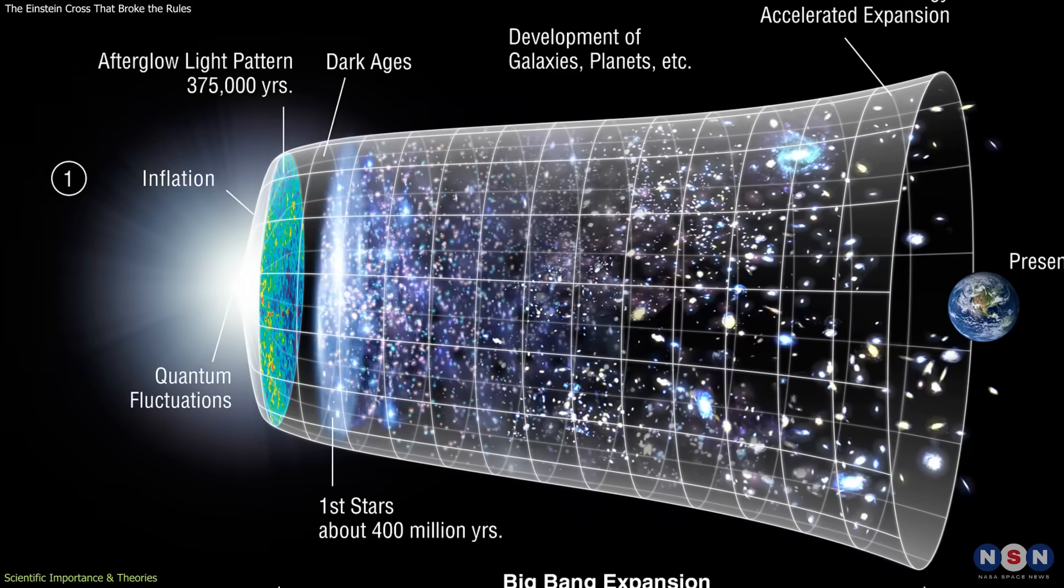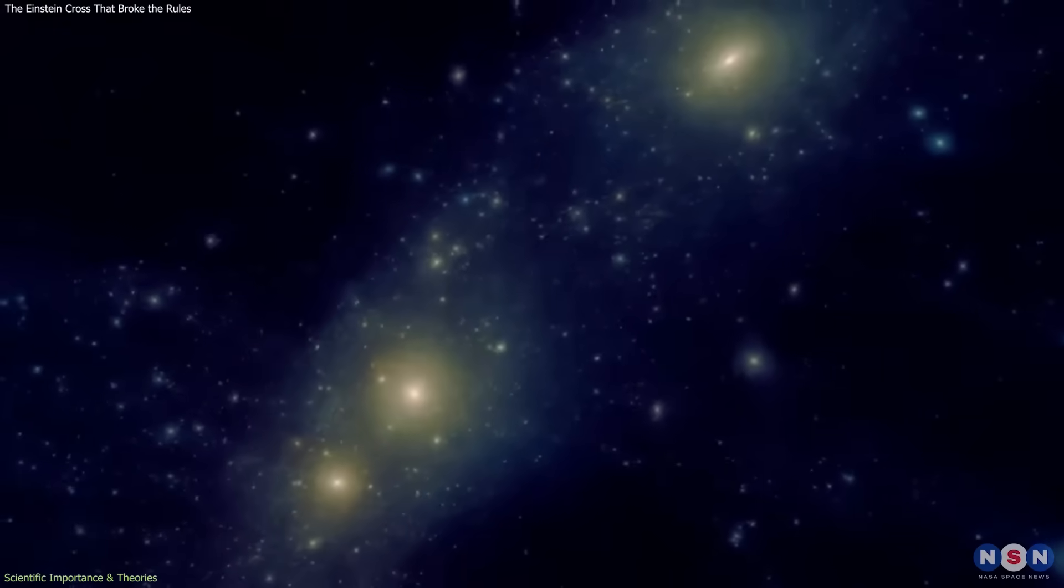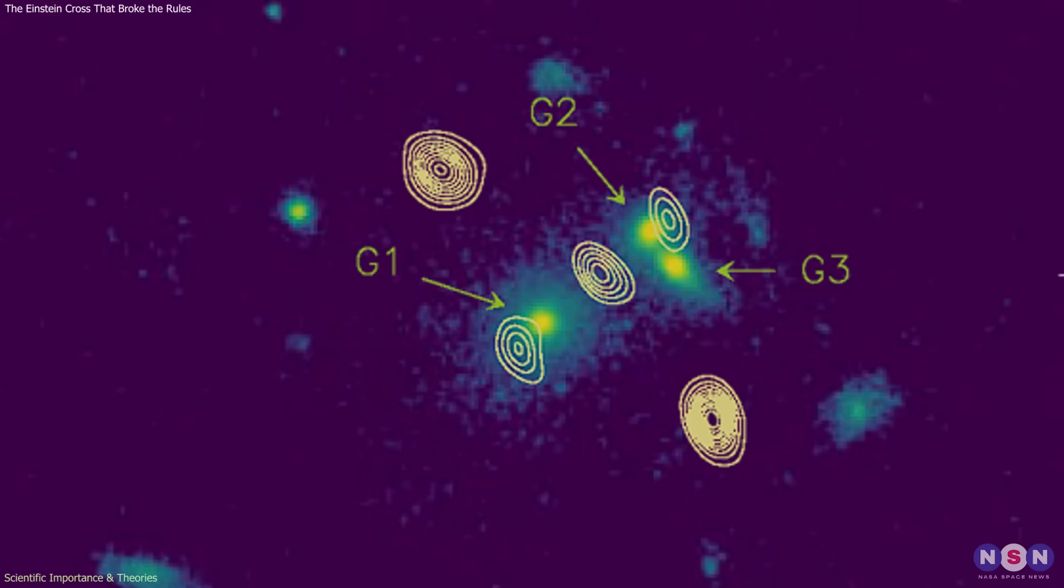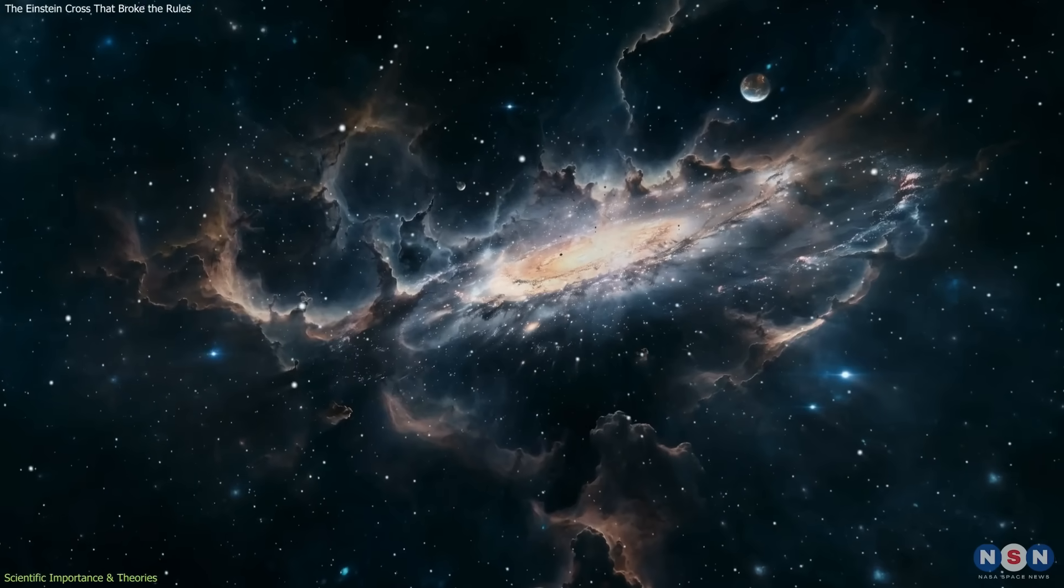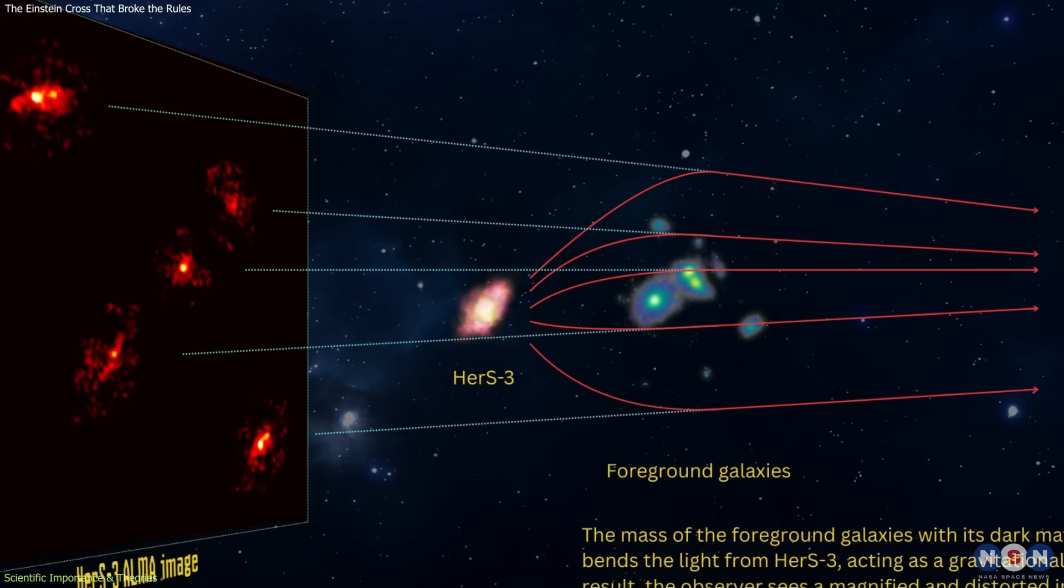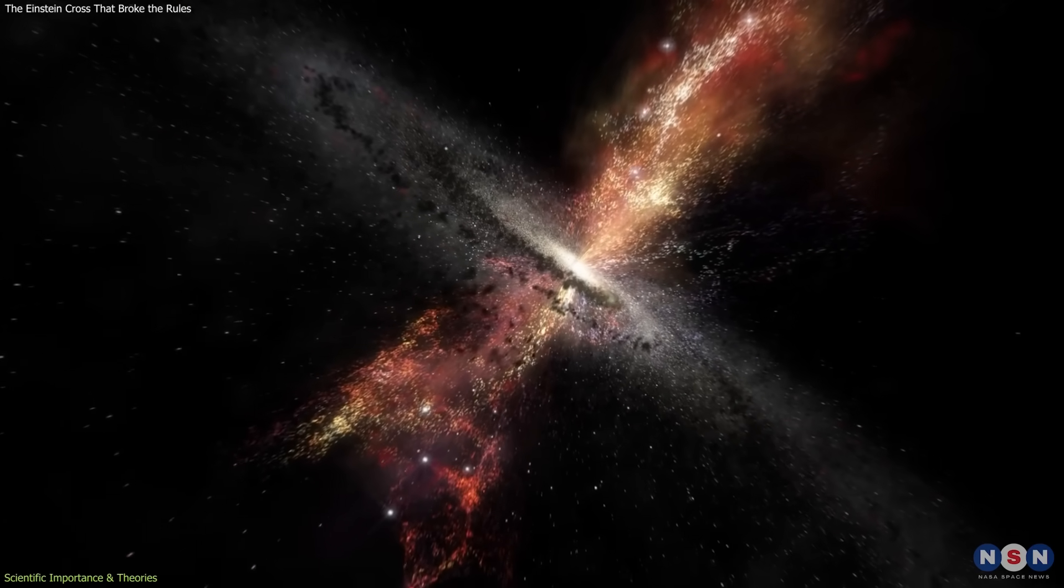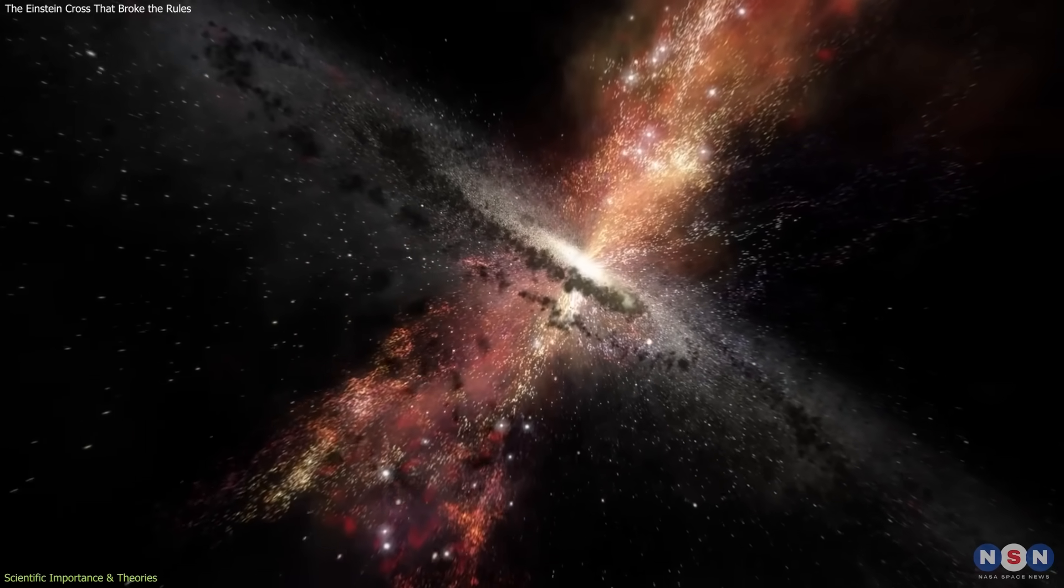Testing cosmological models: The standard model of cold dark matter predicts halos around galaxies and groups, but anomalies like this refine our understanding of how they form and evolve. Studying the distant universe: The gravitational lens magnifies HER-S III, allowing astronomers to study its star formation, gas flows, and structure more clearly than would otherwise be possible.